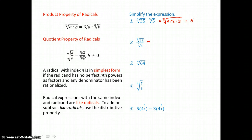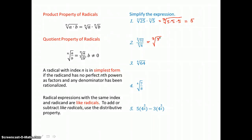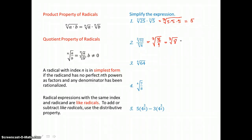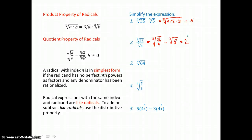In problem 2, I want to use the quotient property of radicals. I have the same root top and bottom, so if I take the cube root of that fraction — 32 fourths — I'll be able to simplify, because 32 divided by 4 is just 8, and the cube root of 8 is 2, because 2 times itself 3 times gives us 8.